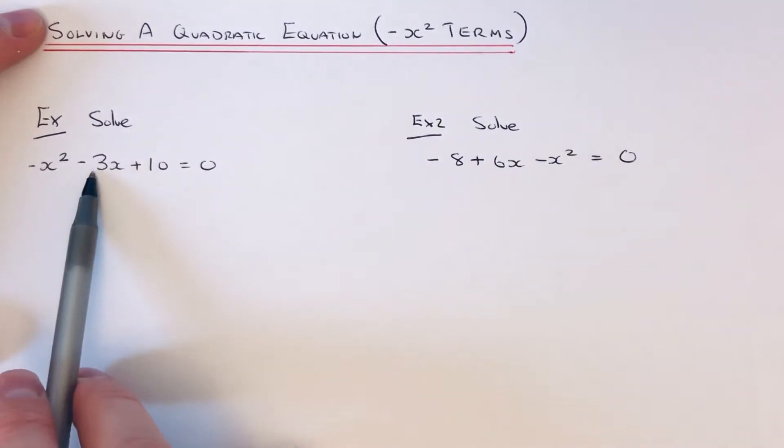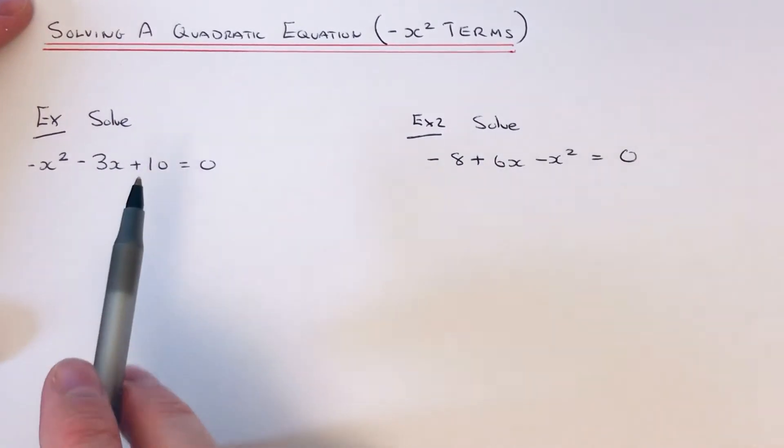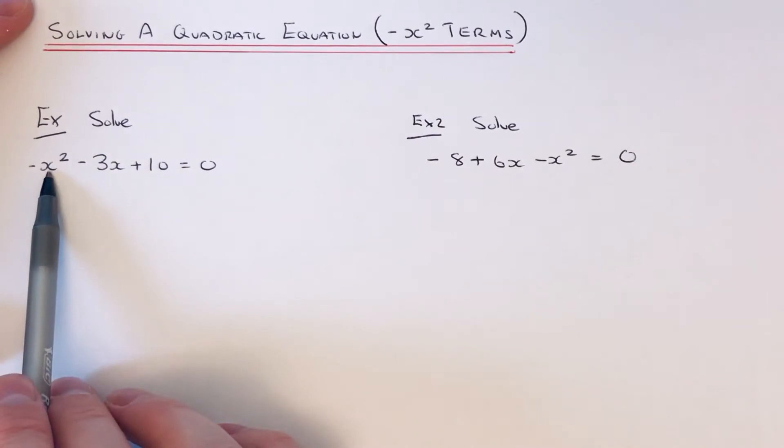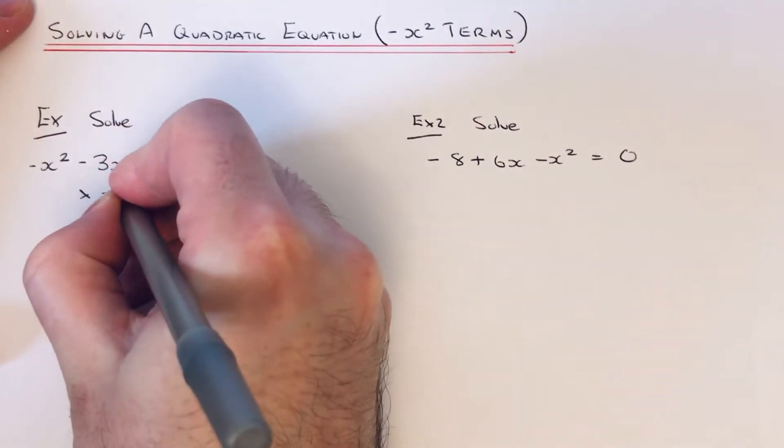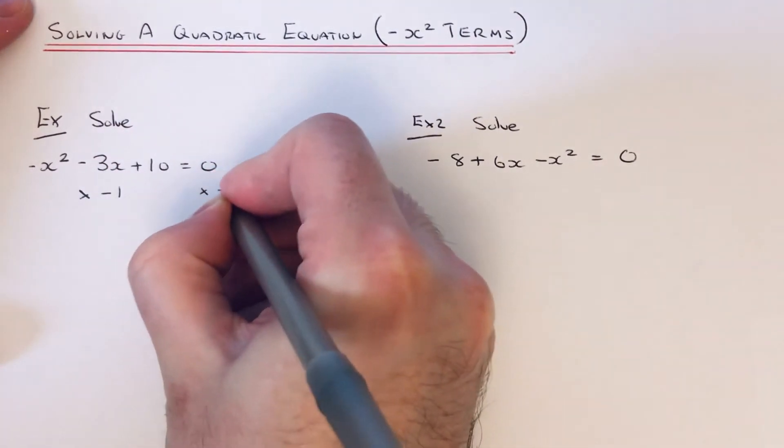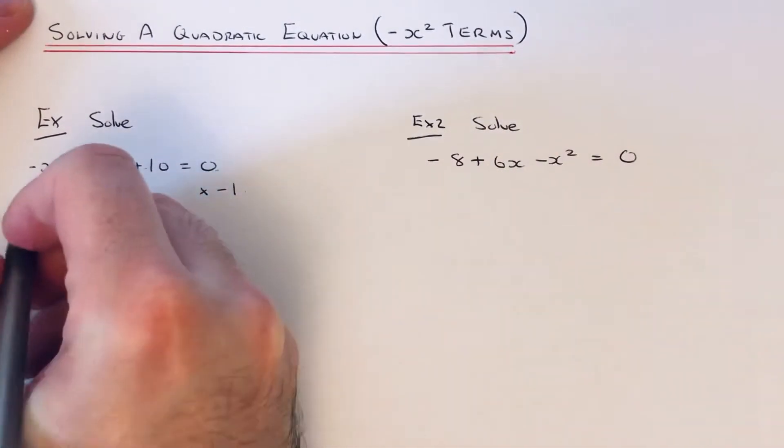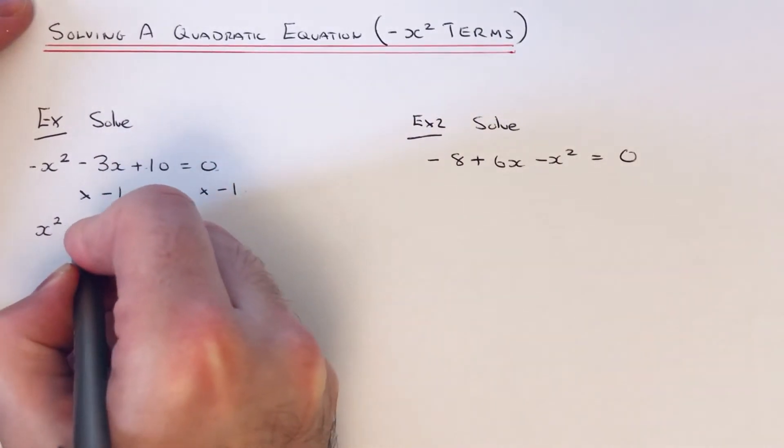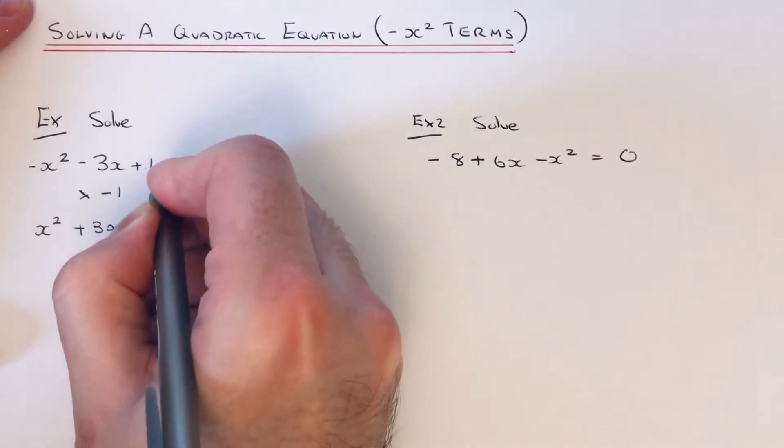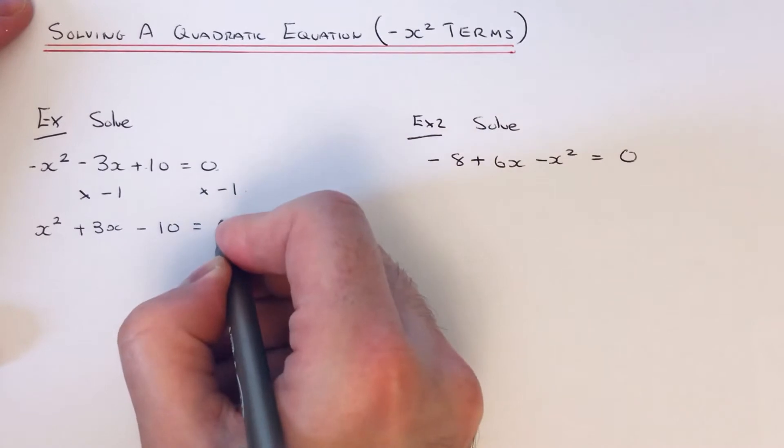So we've got to solve minus x squared minus 3x plus 10 equals 0. So the best way of doing this will be to change the minus x squared into a positive x squared term. So you can do this by multiplying both sides of the equation by negative 1. And this will change the sign of each term. So minus x squared times minus 1 would be plus x squared, minus 3x times minus 1 would be plus 3x, and 10 times minus 1 would be minus 10, and 0 times minus 1 is 0.